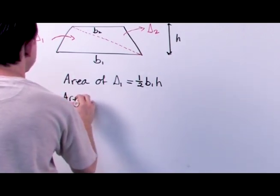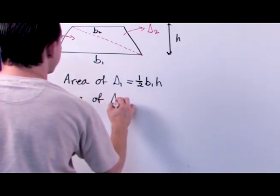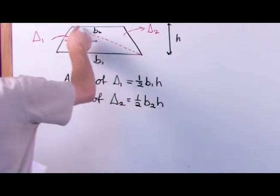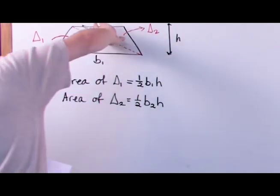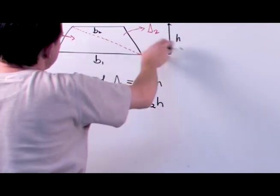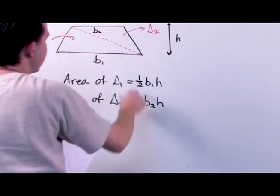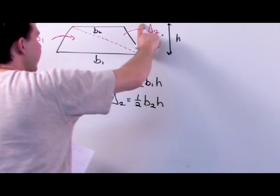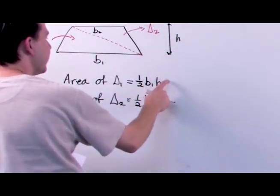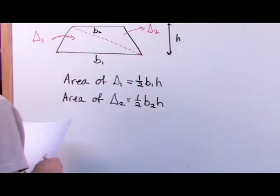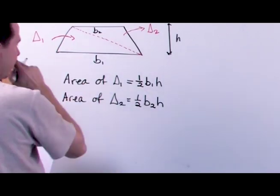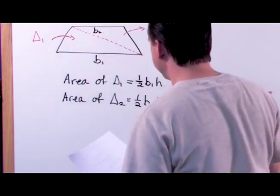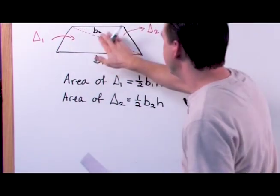The area of triangle two is one half times B2 times H. When we look at that triangle, B2 is regarded as its base, and its height is the same height as the trapezoid. The only difference between the two triangle areas is the length of the base, which makes sense because they are two different triangles.